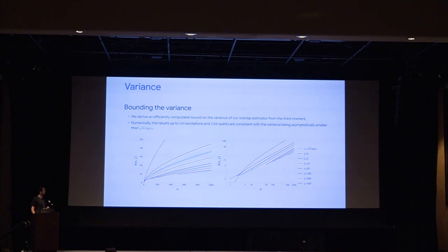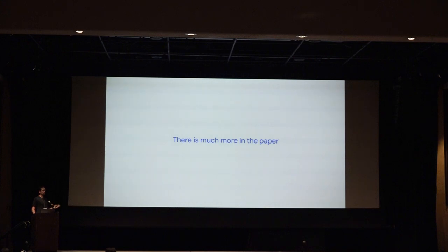In the paper we also talk about bounding the variance for some other quantities that one might want to estimate, but I'll skip those for the purpose of brevity here, and just say there's much more in the paper including some expressions that one might use if you were trying to generalize this work to other sorts of quantities besides the ones that we were talking about.